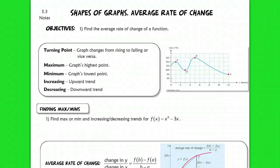This lesson is for section 3.3. We're going to be talking about some vocab with graphs, but most importantly, we're going to be discussing average rate of change. This is a topic that you're going to see a lot in calculus next year, so I want to give you a good foundation for what that means.